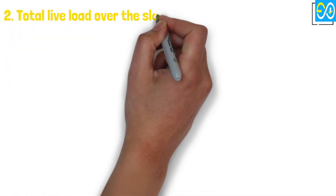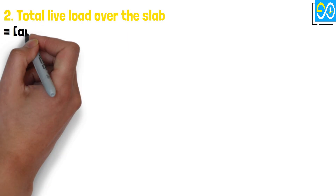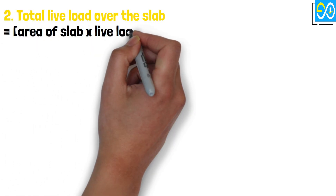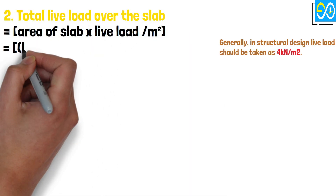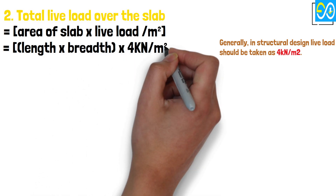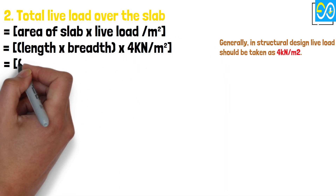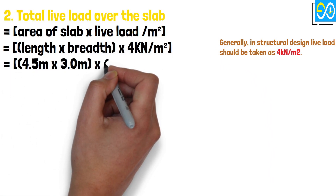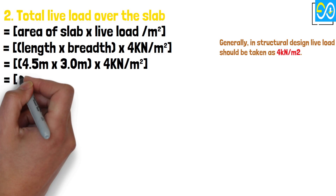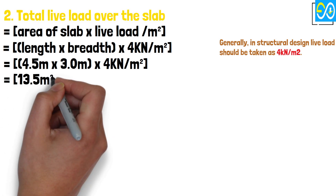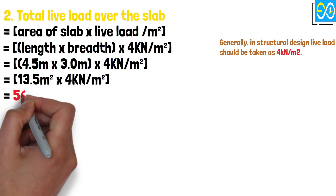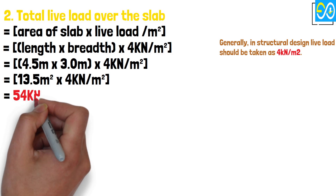Total live load over the slab equals area of slab times live load equals length times breadth times 4, equals 4.5 times 3.0 times 4, equals 13.5 times 4, equals 54 kN.